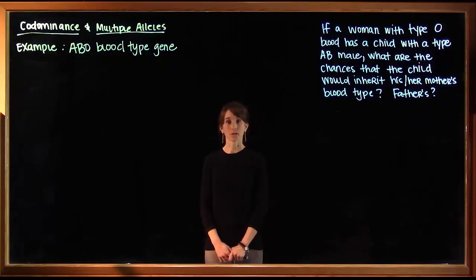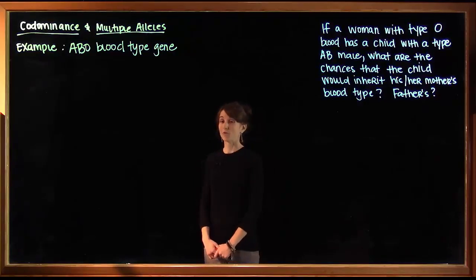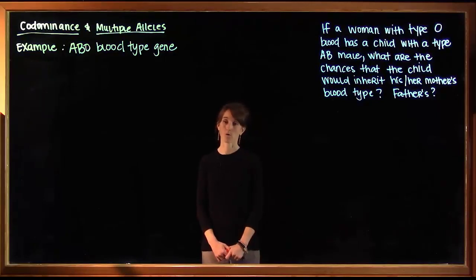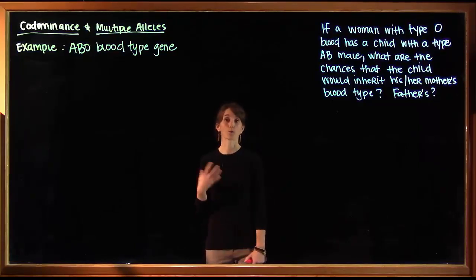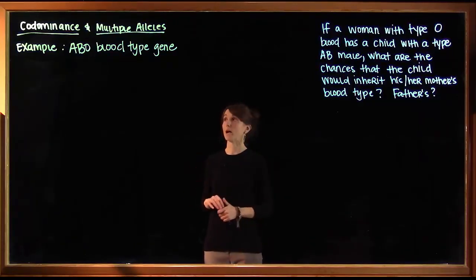In order to look at both of these, we're going to use the example of the ABO blood type in humans, which is a gene located on chromosome 9. If you know your blood type, you might know whether you're A positive or O negative. The positive and negative is a separate gene, and there are actually dozens of genes that code for different sorts of blood types. We're just looking at one.